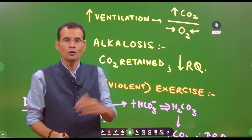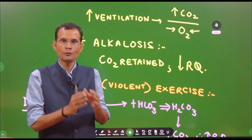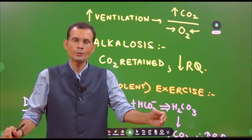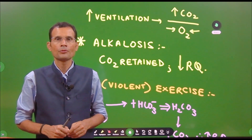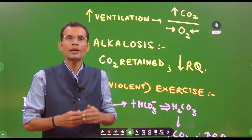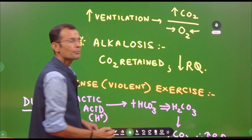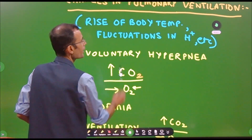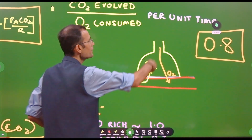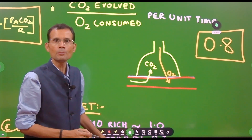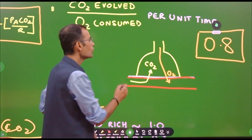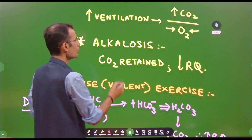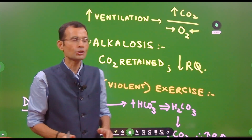Conversely, in a condition of alkalosis, CO2 is actually retained in the body. Acidosis stimulates ventilation; alkalosis depresses ventilation. If ventilation is depressed, CO2 gets retained in the body, and less CO2 reaches the alveoli to be expelled out. Since it's all about how much CO2 is expelled at the level of the lungs — less CO2 in the numerator — in the condition of alkalosis the respiratory quotient is less.